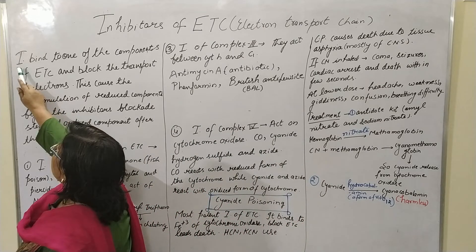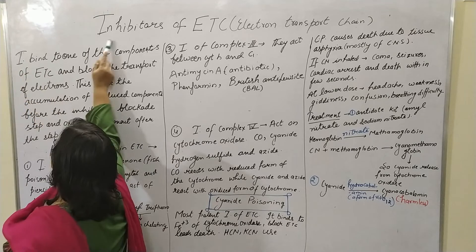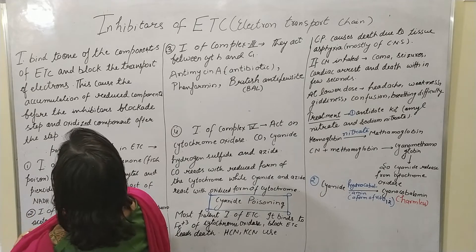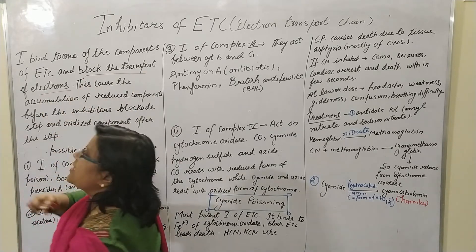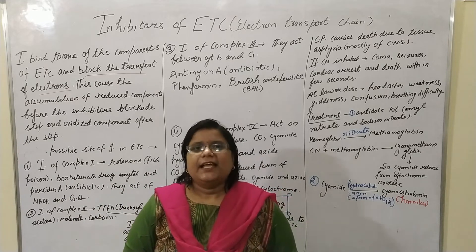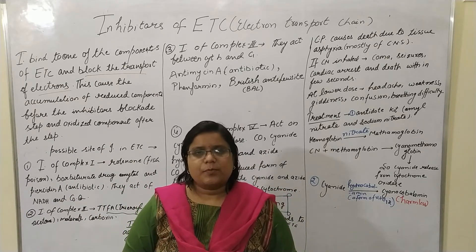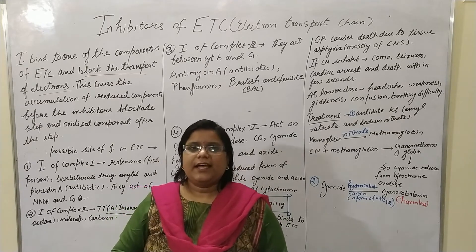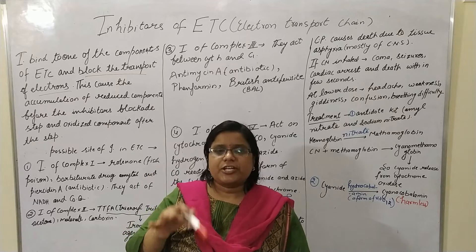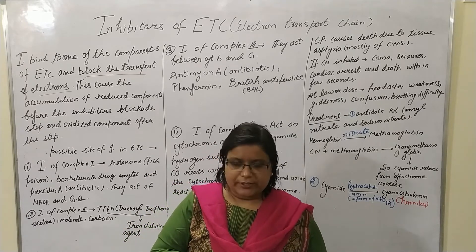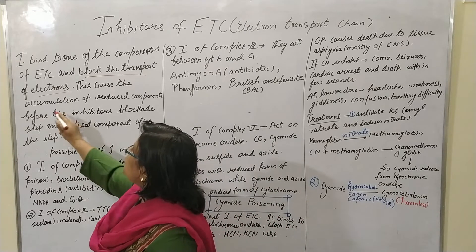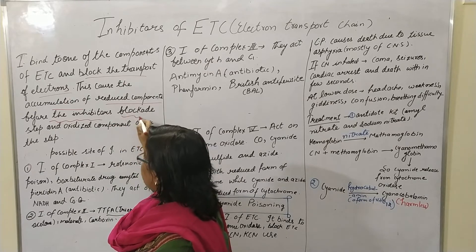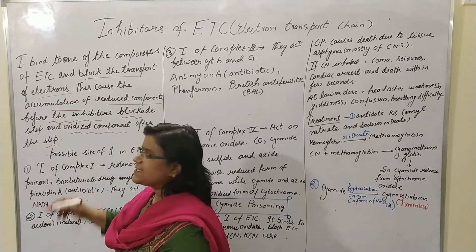Here, I stands for inhibitor. An inhibitor binds to one of the components of ETC and blocks the transport of electrons. As we have seen in the electron transport chain, electron shuffling takes place, and the inhibitors can block the shuffling or movement of electrons. This causes the accumulation of reduced components before the inhibitor blockage step and oxidized components after the step.